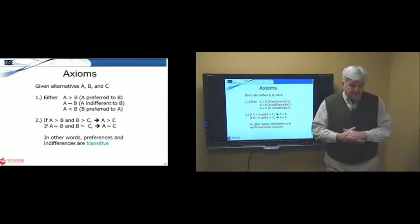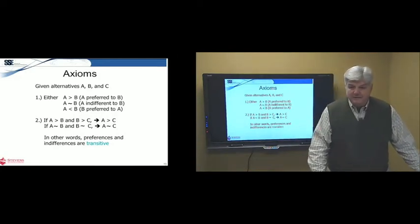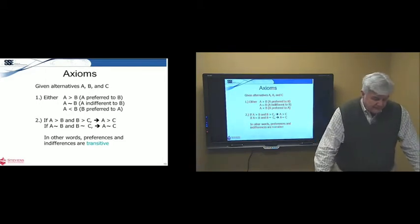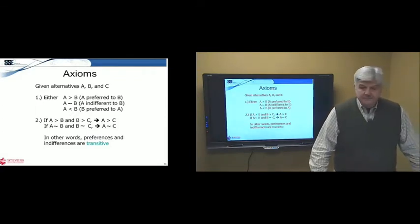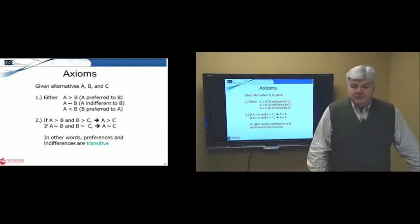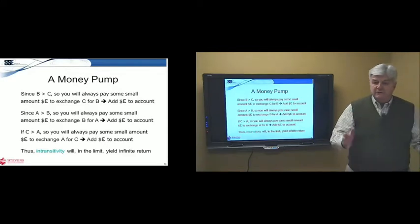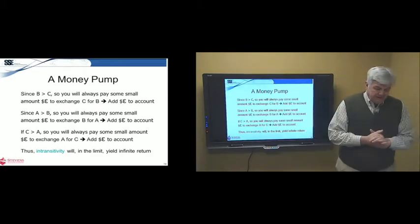So, the first axiom says that you either prefer A to B, you're indifferent between them, or you prefer B to A. It's kind of hard to argue with that. The second axiom says that if you prefer A to B and B to C, then you would prefer A to C. And this means that your preferences are transitive. So, maybe you say, no, my preferences aren't transitive. So, there it goes. I don't really want to buy any of these axioms. Let's look at that.